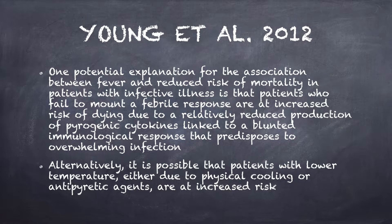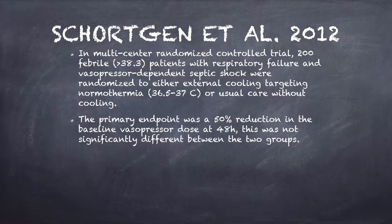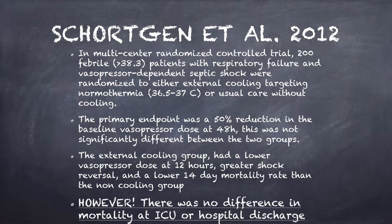Alternatively, it is possible that patients with lower temperatures, either due to physical cooling or antipyretics, are at increased risk. Shorten et al. 2012 did a multicenter randomized controlled trial with 200 febrile patients with respiratory failure and vasopressor-dependent shock randomized either to external cooling targeting normothermia or usual care without cooling. The primary endpoint was a 50% reduction in baseline vasopressor dose at 48 hours — there was no difference between groups. The external cooling group did have a lower vasopressor dose at 12 hours, greater shock reversal, and a lower 14-day mortality rate, however there was no difference in mortality at ICU or hospital discharge.